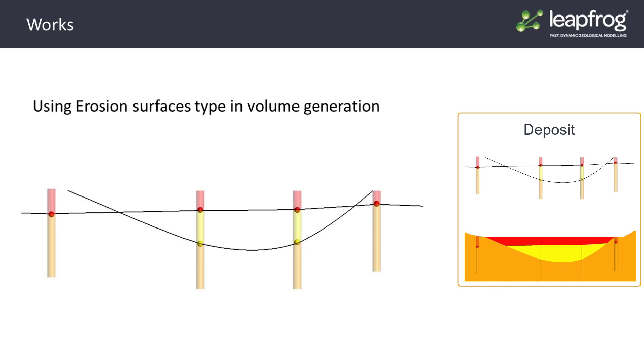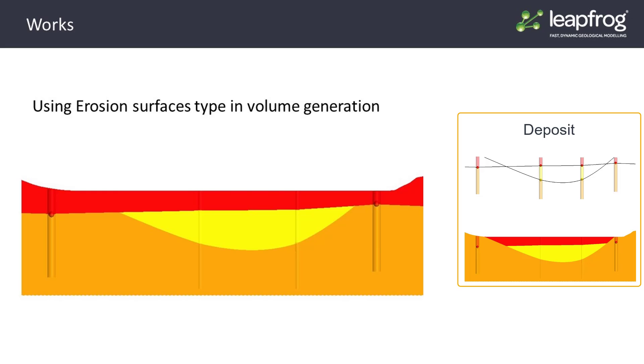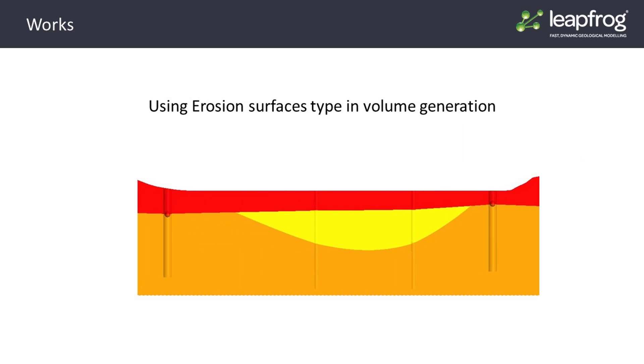In this example, you can see the two surfaces represented by black lines are identical to those in the deposit example. However, in this case, as the red-yellow surface was created as an erosional surface, it cuts or erodes the older depositional surface.